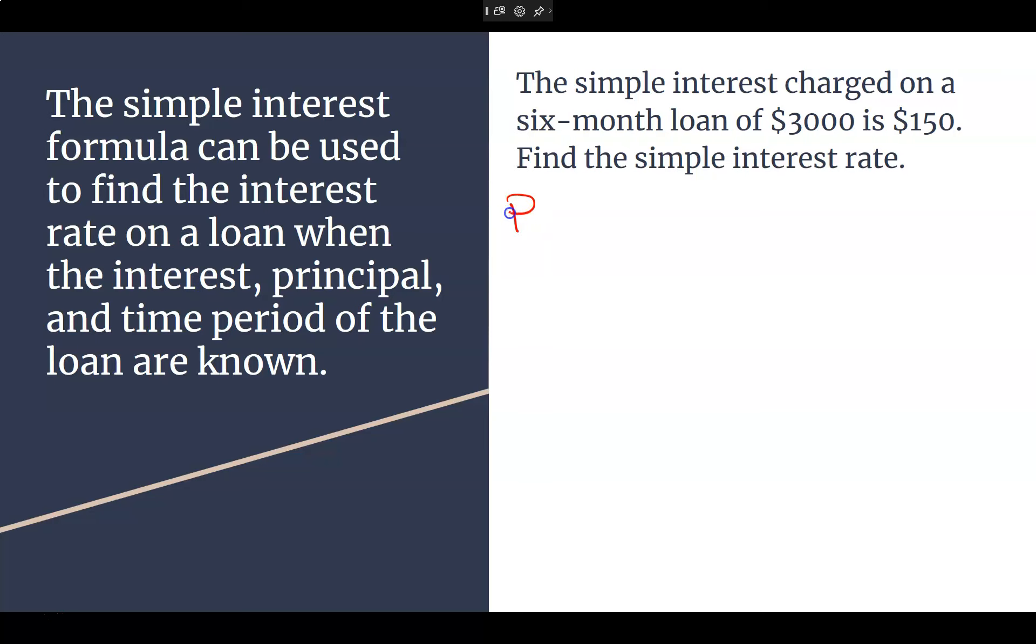Let's see here. P, R, T, but this time they give me the I. So we don't know this this time. What is the principal? $3,000. What's the time that this happened? Six months. Good. So how are we going to represent that? Good. Six out of 12 months, which you could convert to one half, which is also 0.5 if you want to. And they told me the interest. What was the interest gained? $150. Good.